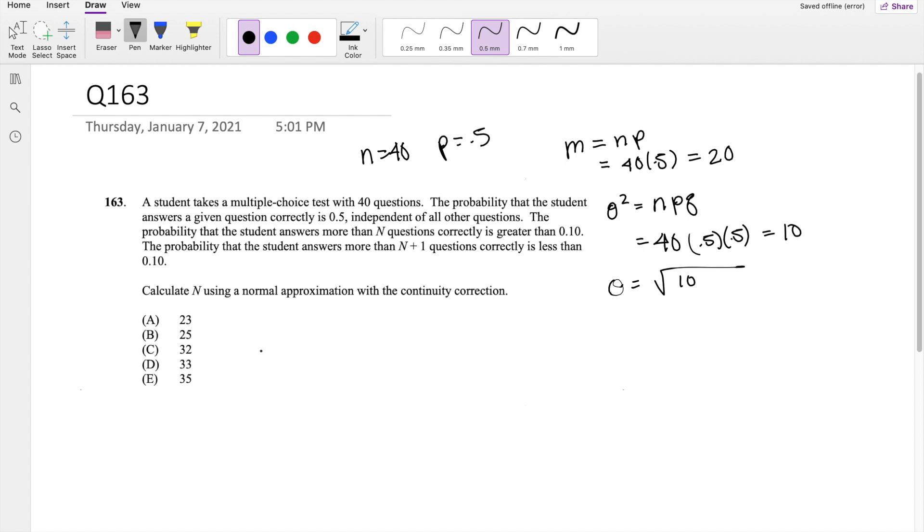And then they tell you the probability the student answered the given question correctly. So I'm going to call x the variable that represents answers correctly. So the probability that x is greater than N is greater than 0.1. And they also tell you to calculate N using a normal approximation with the continuity correction.